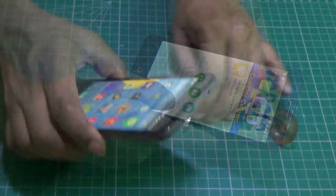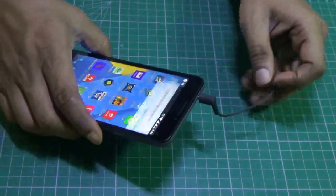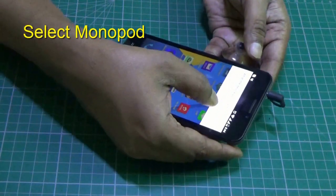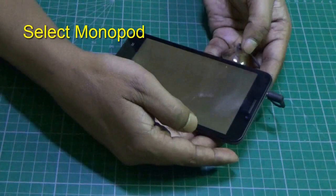Now insert the audio jack. It will ask to select the monopod. Once it gets selected, your app is on.